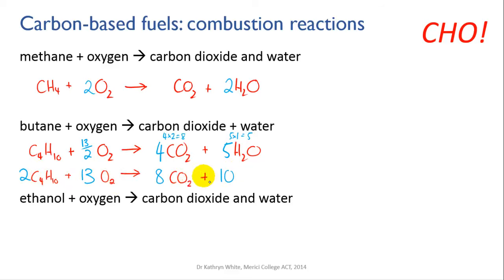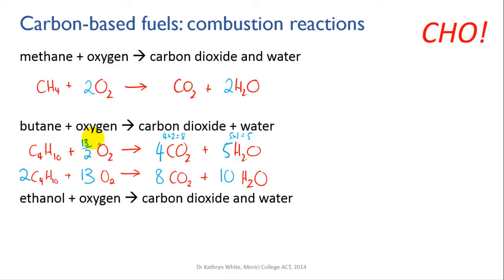Let's double-check: carbons — 2×4 = 8 on the left, 8 on the right. Hydrogens — 2×10 = 20 on the left, 10×2 = 20 on the right. Oxygens — 13×2 = 26 on the left, 8×2 + 10 = 26 on the right. All balanced. This frequently happens with combustion reactions — if you ever get 4½, 6½, or 10½ oxygen molecules, just multiply through the entire equation by two.